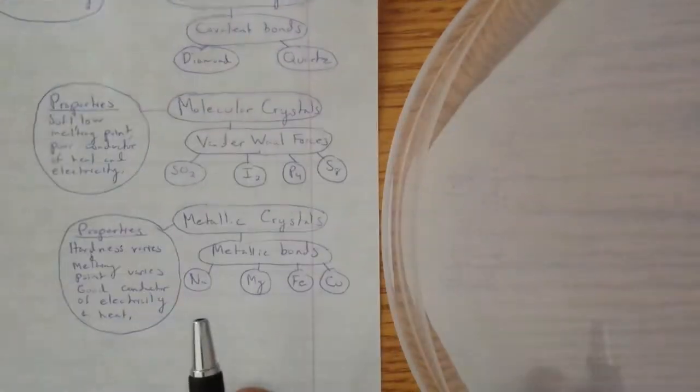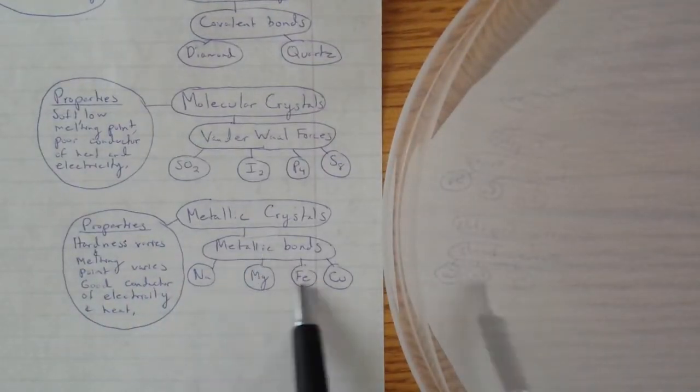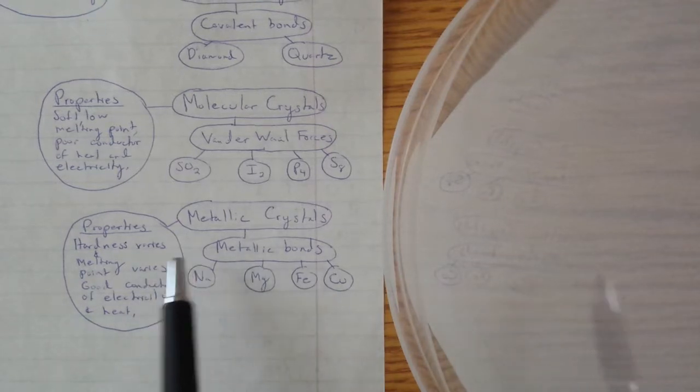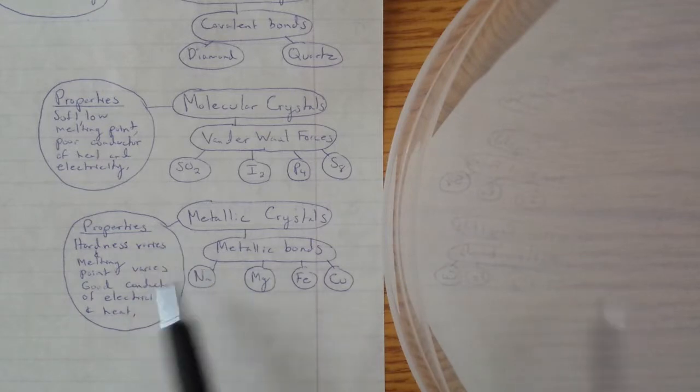Finally, metallic crystals. Metallic crystals are made up of metallic bonds. These are some examples. The thing about metals is that their hardness and melting point vary greatly, but they are a